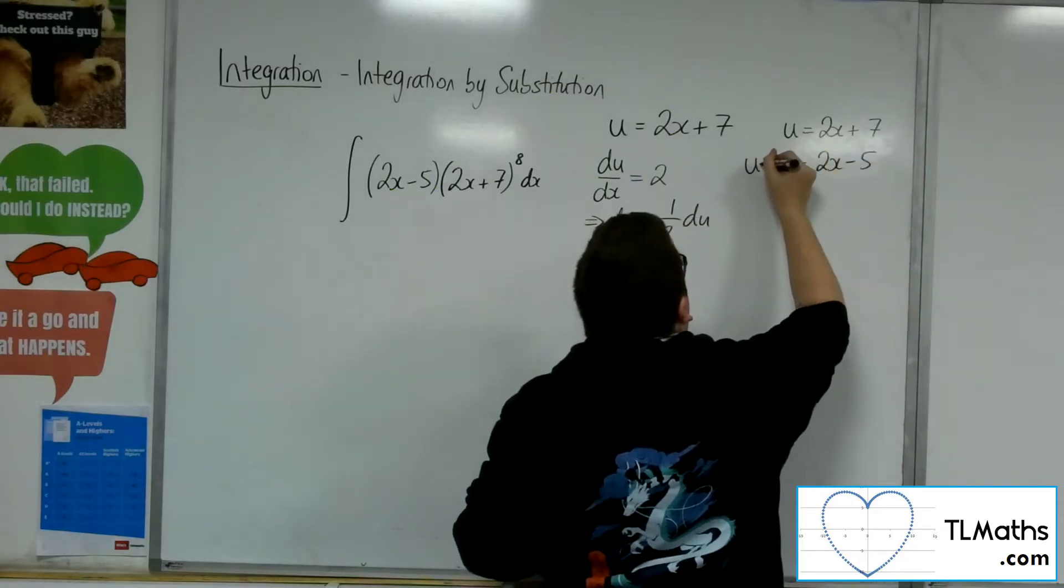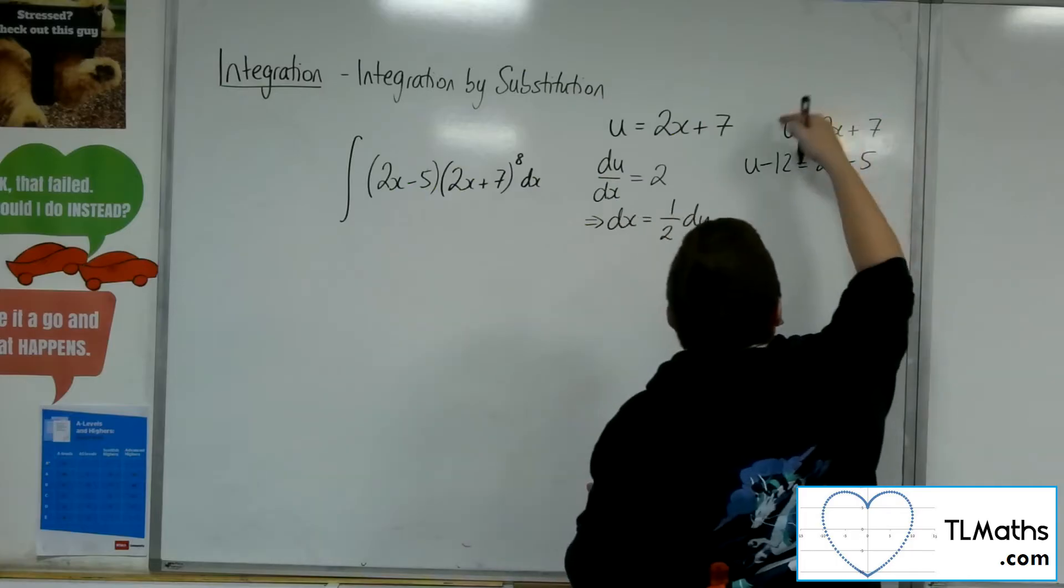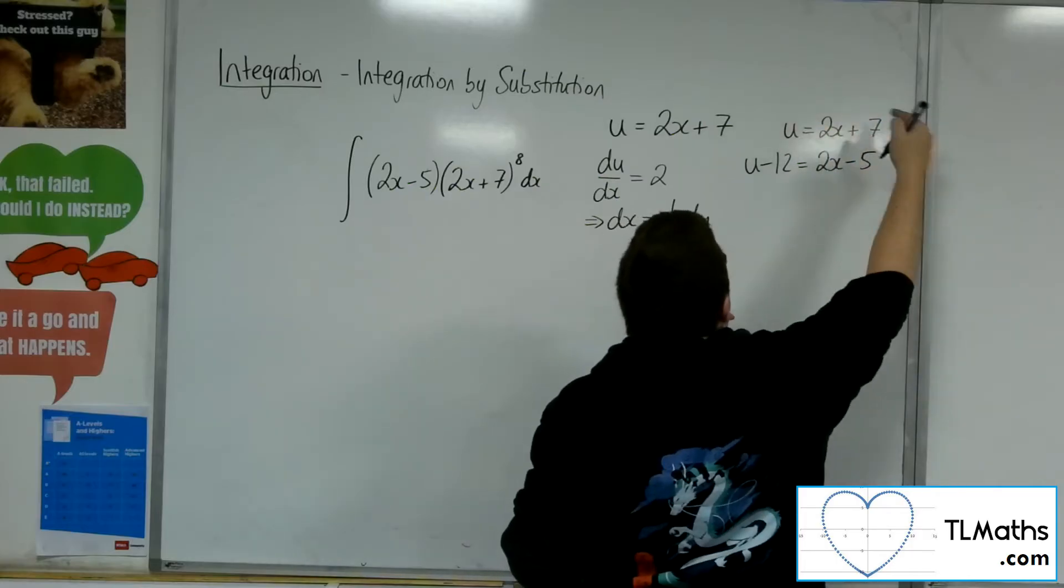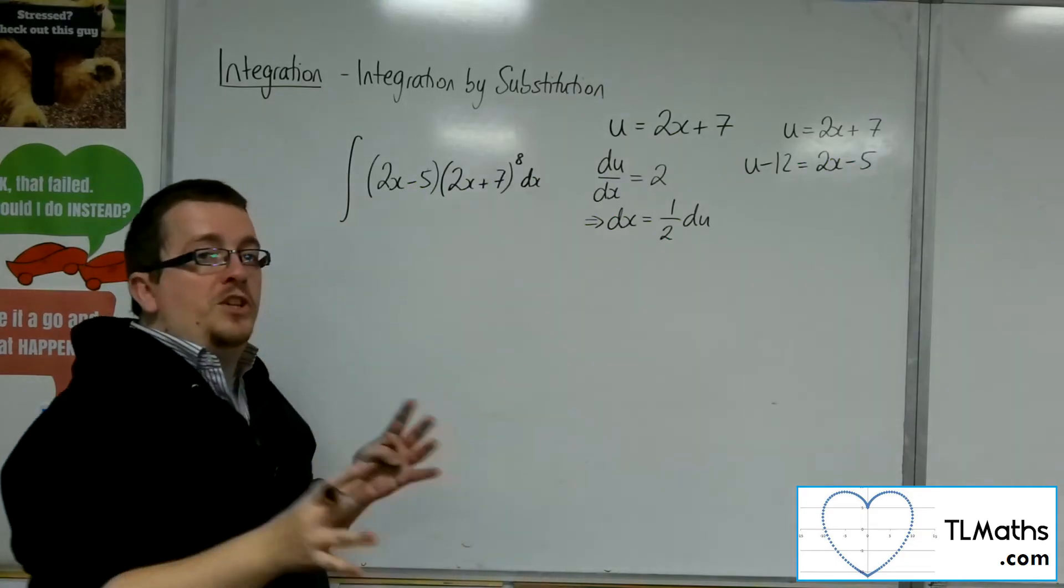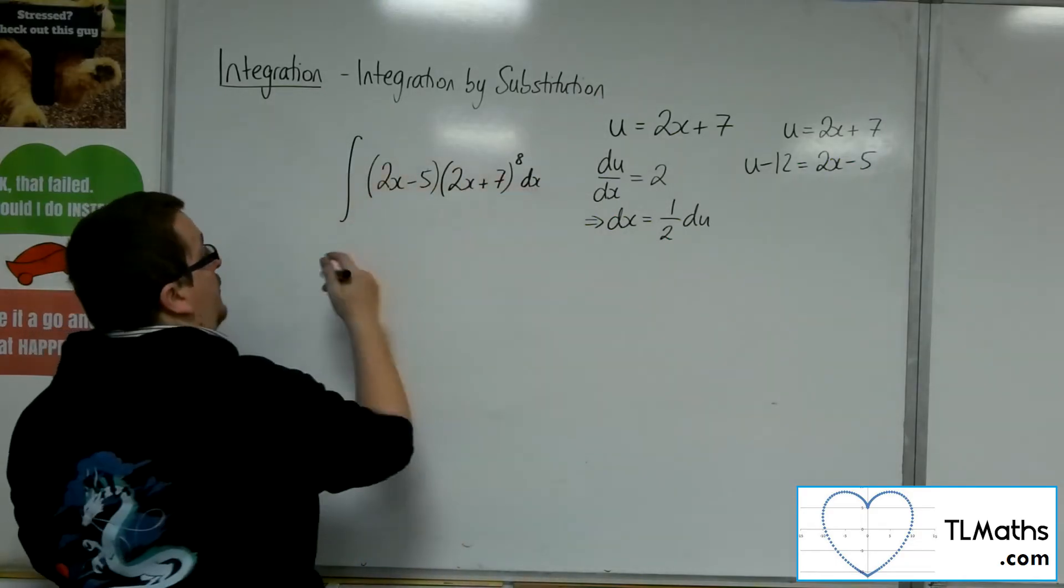I need to subtract 12, so I'm subtracting 12 from both sides of that equation. So I now have a replacement for the 2x minus 5. It's u minus 12.